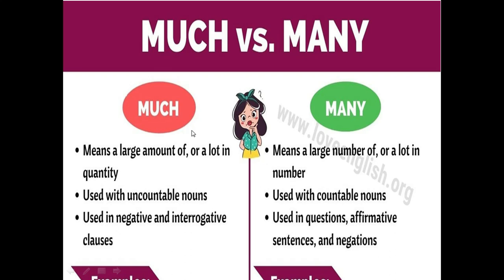It will be very clear to you with this picture. 'Much' means a large amount of, or a lot in quantity. 'Many' also means a large number of, or a lot in number. The thing is that with 'many' we are having a number that we can count, but with 'much' we are having an amount that we cannot count. Much is used with uncountable nouns and many is used with countable nouns. They are used in negative and interrogative clauses. Negative sentences are those which negate something — 'not' is used in them. Interrogative clauses are those in which some question is asked. Many is also used in affirmative sentences, which are simple positive sentences like 'she is going to school.'